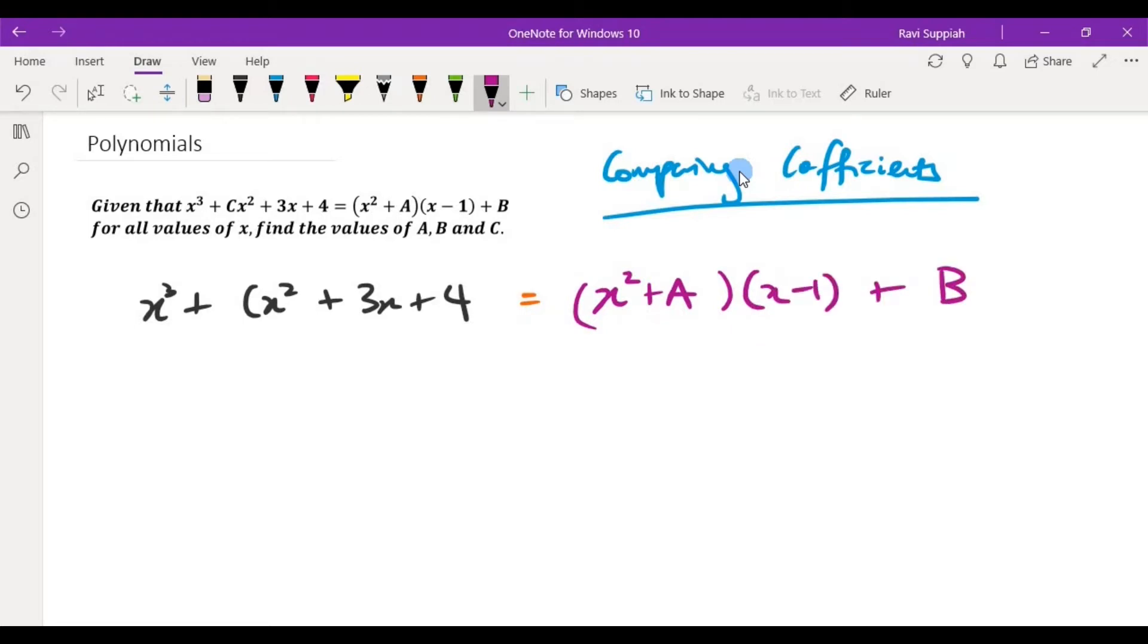Now in order for me to solve for a, b, and c, there are three unknowns here: a, b, and c.